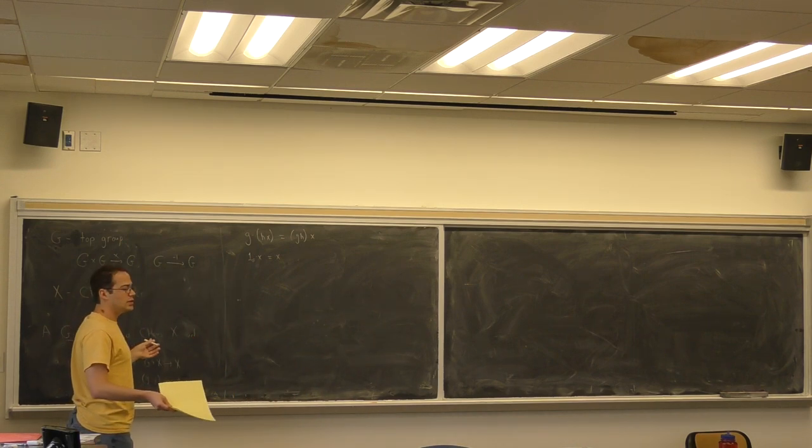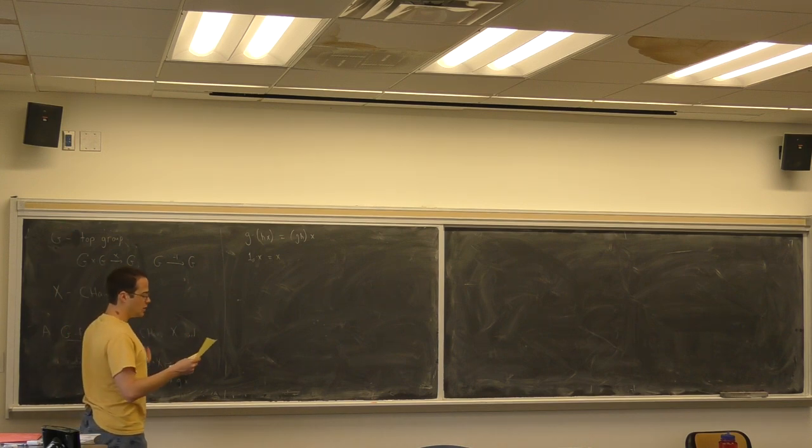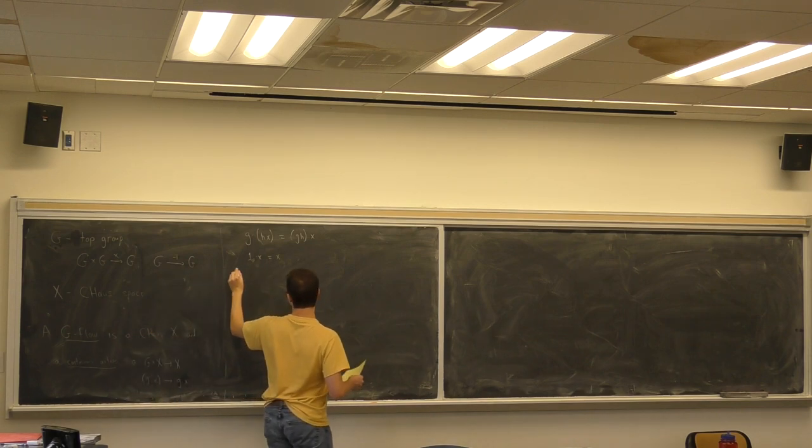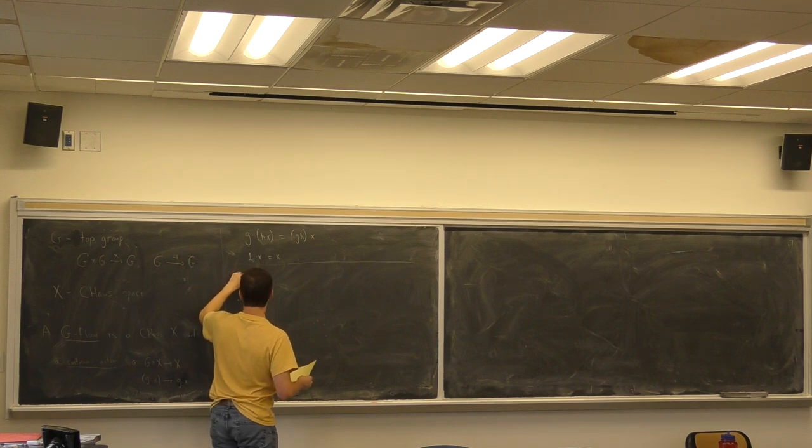So this is all of G-flow. So we have an object, we have some group of symmetries, it's moving around. What are some examples? Let's make it a little concrete.